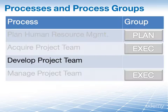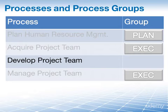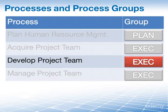This knowledge area is pretty straightforward when it comes to the process groups into which our four processes fall. The first one, plan human resource management, is a planning process group. And then the next three, including develop project team, they're all part of the executing process group.